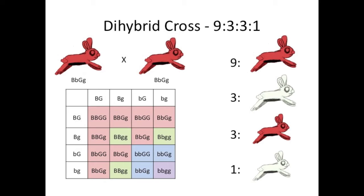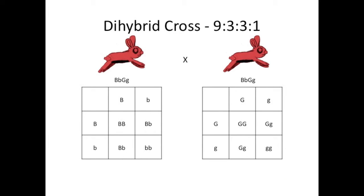On the MCAT, taking the time to construct this chart is a bad idea — it takes forever, and there are shortcuts you can take. The first is to realize that you can look at a dihybrid cross as the product of the two individual monohybrid crosses. Want to know the fraction of red normal-sized bunnies? Multiply the chance for red by the chance for normal size to get 3/16. Red and giant? 3/4 times 3/4 is 9/16, and so on. The numerators all correspond to the 9 to 3 to 3 to 1 ratio.